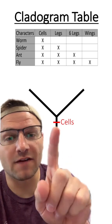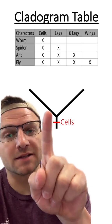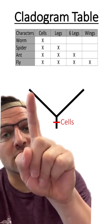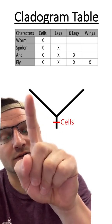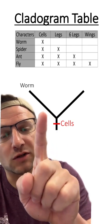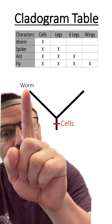Make the speciation event, and then I'm going to place the only species that only has cells. In this case, it's going to be worms, and you can see it diverges first.